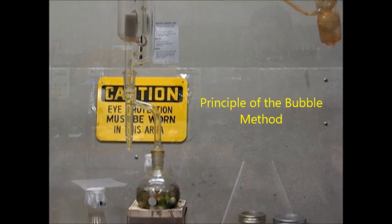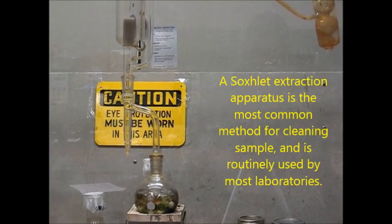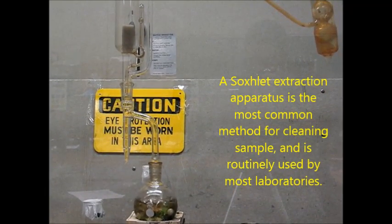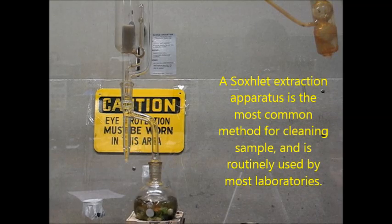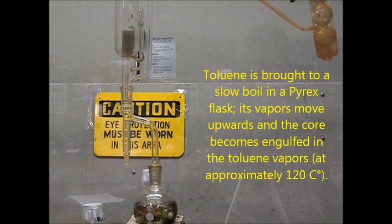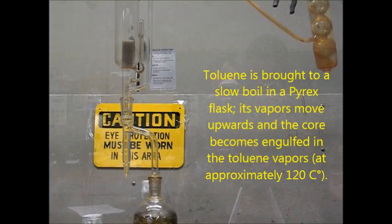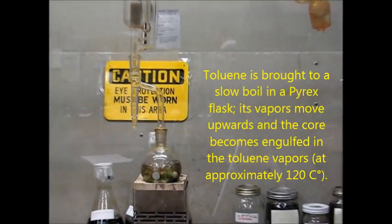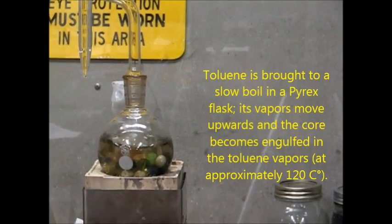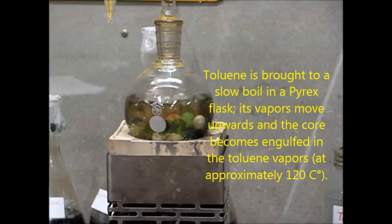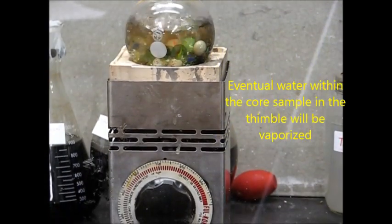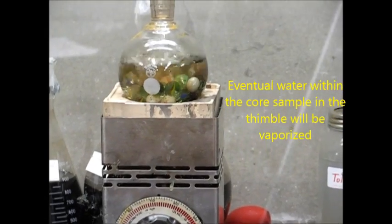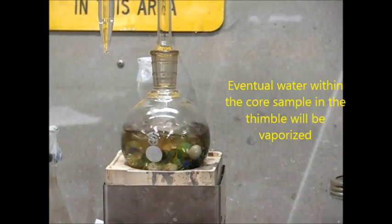The principle of the bubble method: A Soxhlet extraction apparatus is the most common method for cleaning sample and is routinely used by most laboratories. The toluene is brought to a slow boil in a Pyrex flask. Its vapors move upwards and the core becomes engulfed in the toluene vapors at approximately 120 degrees Celsius. Eventually, water within the core sample and the thimble will be vaporized.